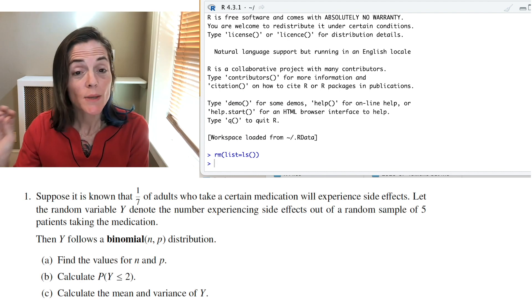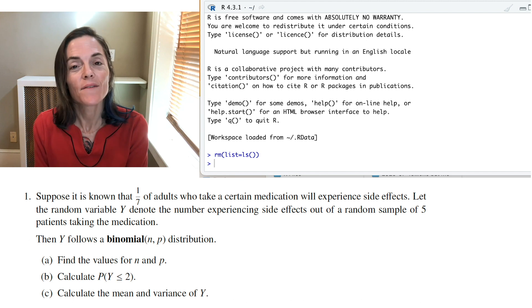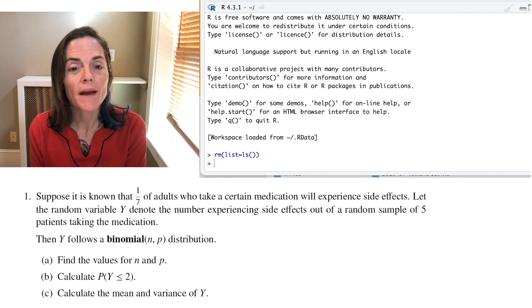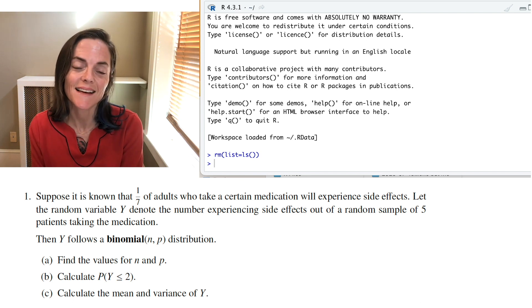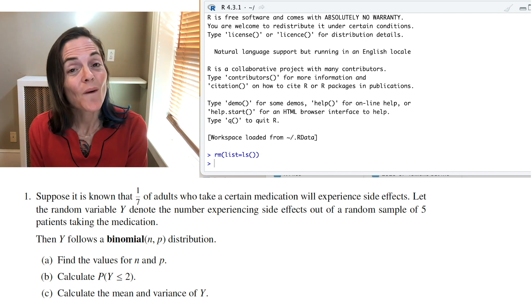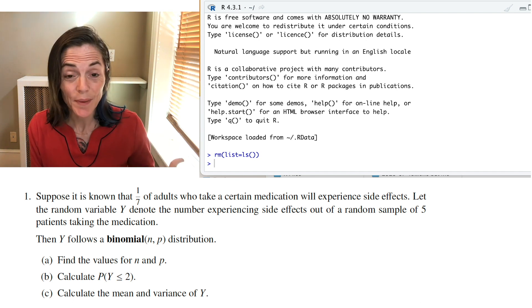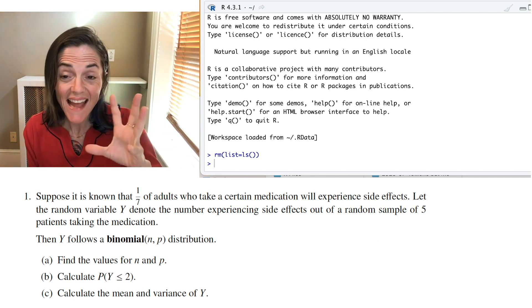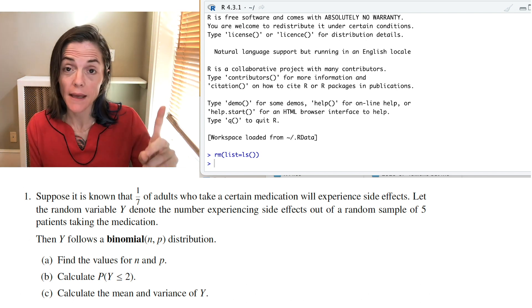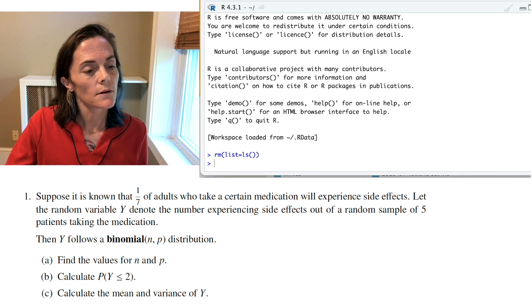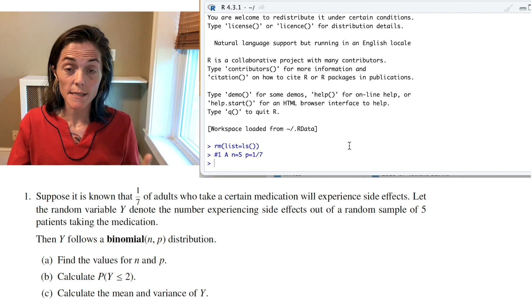Number 1. Suppose it is known that one-seventh of adults who take a certain medication will experience side effects. Let the random variable Y denote the number experiencing side effects out of a random sample of five patients taking the medication. Well, Y follows a binomial distribution. Letter A, find n and p. Okay, we see n is 5 and p, the probability, is 1 over 7. In fact, maybe I will do that here. n is 5, p is 1 over 7.